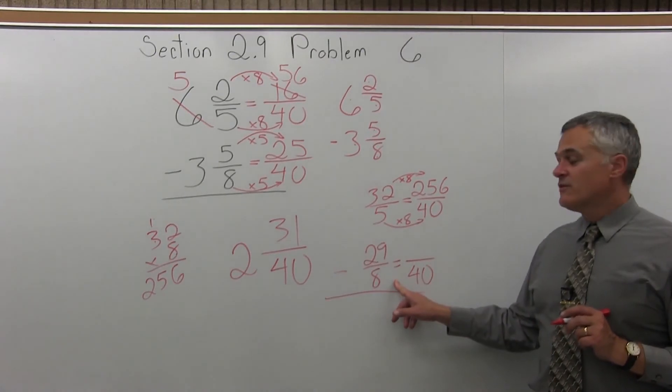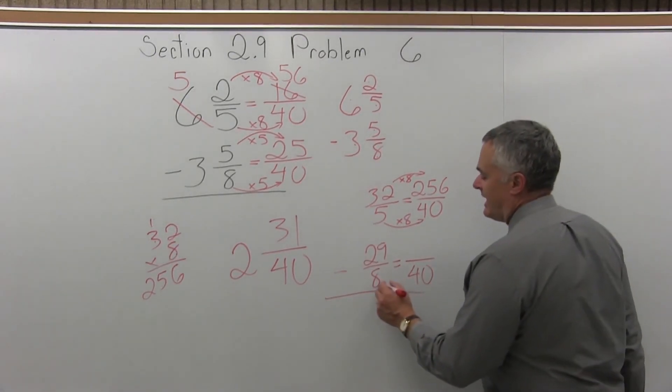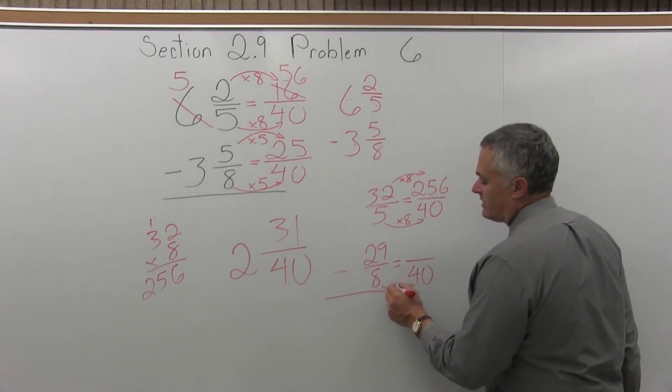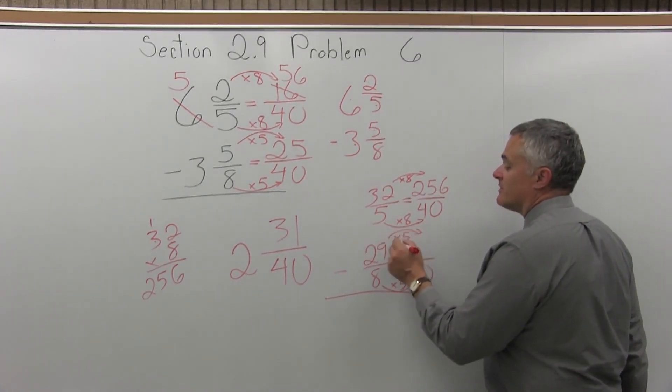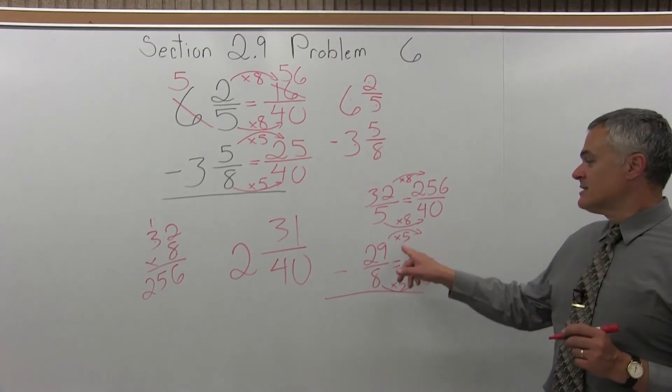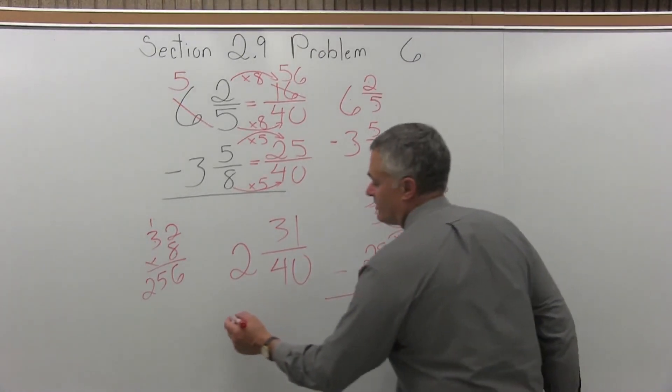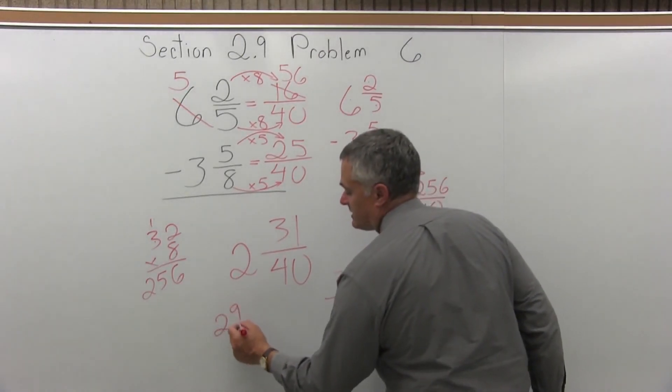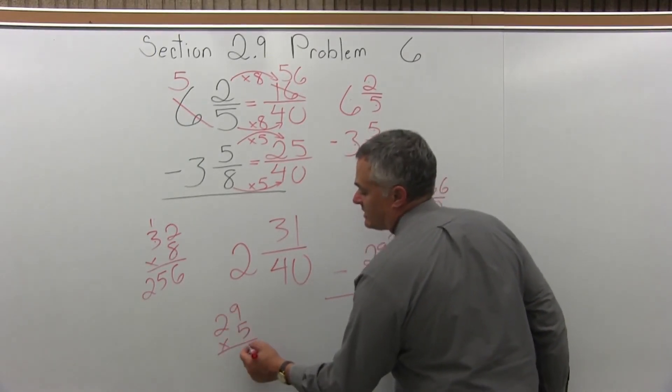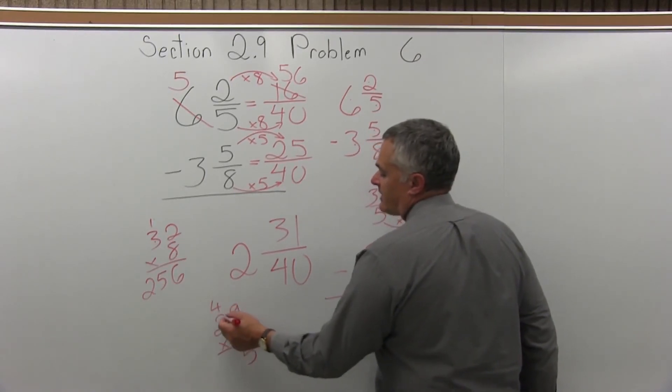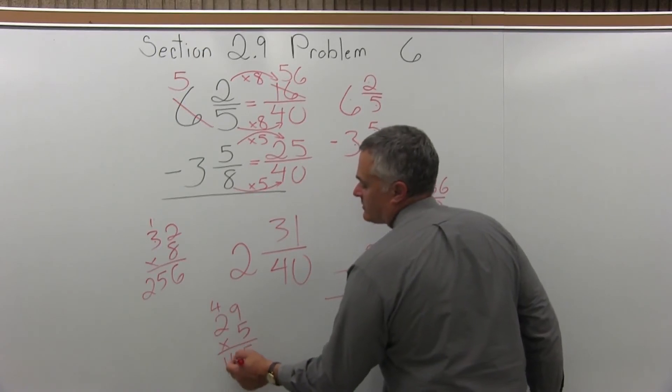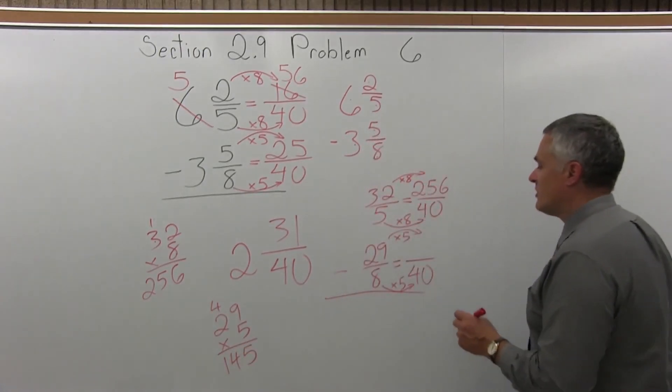Now do the same thing for the lower fraction. 8 times some number was 40, well 8 times 5 is 40, so the numerator is times the same amount, 29 times 5. Now again, that's tougher to do in your head. If you see it, great. And if you don't, just go off to the side. 29 times 5. 5 times 9 is 45, put the 5, carry the 4. 5 times 2 is 10, 10 plus the 4 that you carried, 10 plus 4 is 14, so that makes 145.